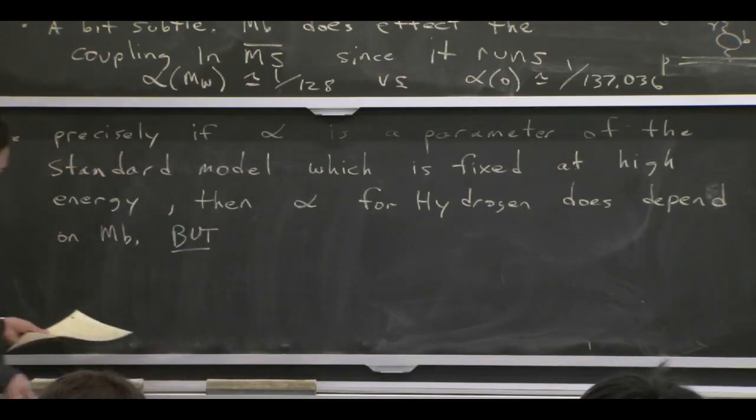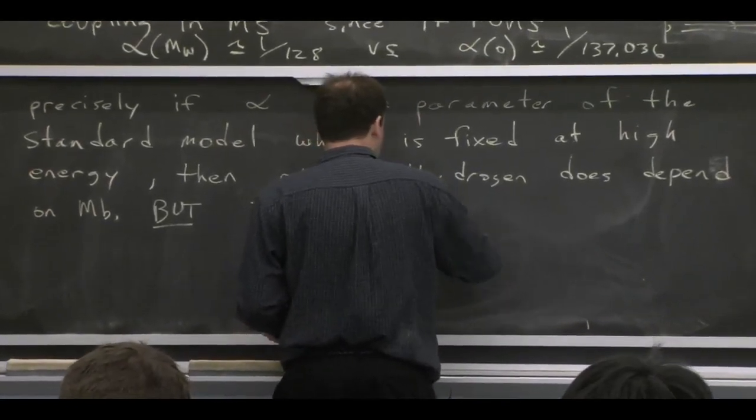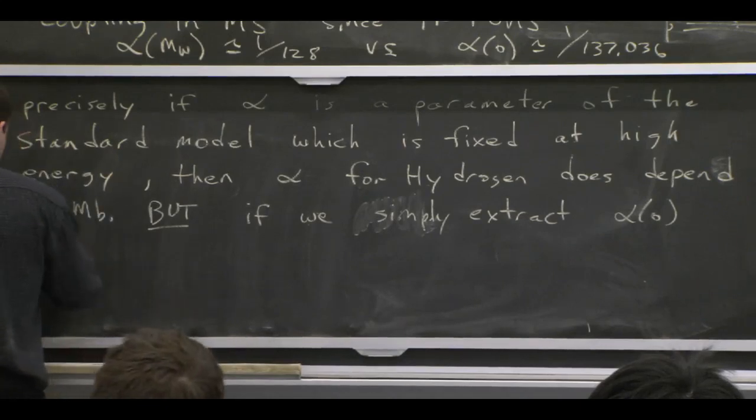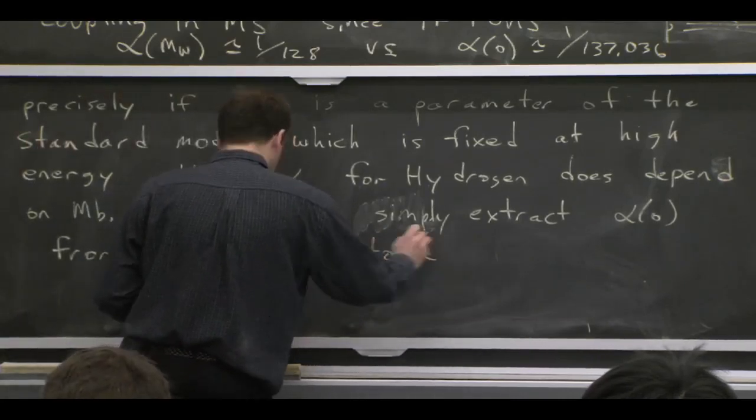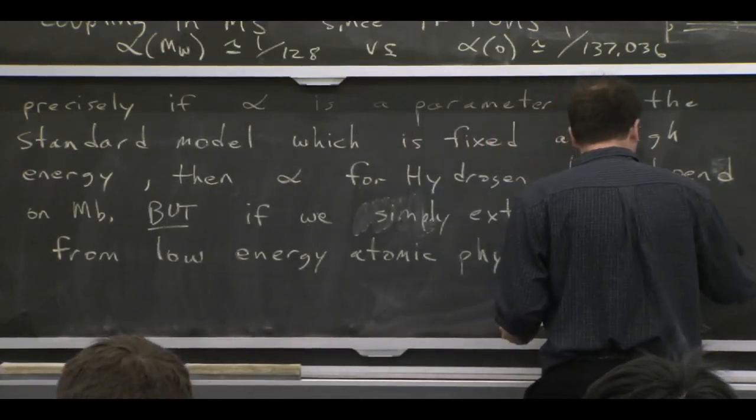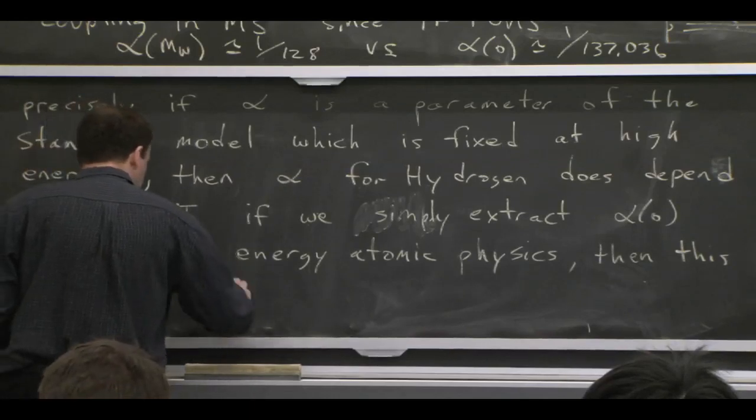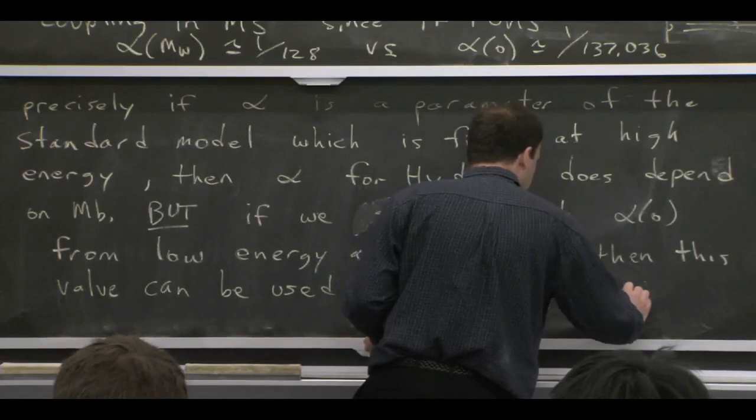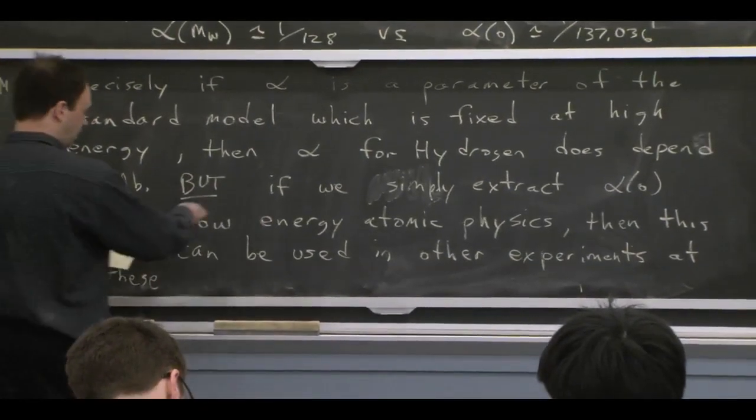But we could also take a different attitude. We could take a low energy attitude. Let's forget about doing high energy physics. Let's just do low energy physics and extract alpha of 0 from some low energy atomic experiments. If that's the way that we define the parameter, then the value can be used in other experiments and we never had to know anything about Mb. We didn't really have to know about the higher energy theory unless we were doing some experiments up there.